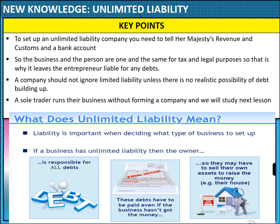Key points on unlimited liability. Quite easy to do — you just need to tell HMRC and set up a bank account. But the business and the person are one, so their tax and legal purposes are also one, which leaves the entrepreneur liable for any debt. Companies should not ignore limited liability unless there's no realistic possibility of debt building up. An example might be a market stall trader who buys stock in the morning and sells it in the afternoon — probably won't have much debt. But that's a very rare type of business. A sole trader runs a business without forming a company and we will study that more next lesson.